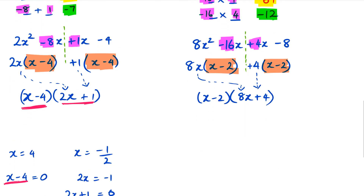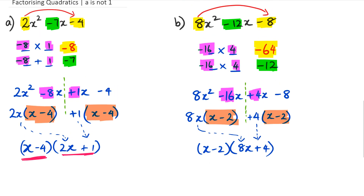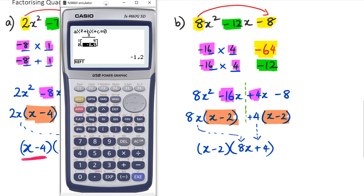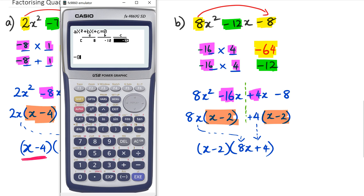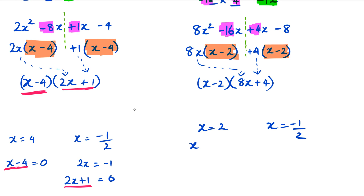One more thing — when you have a look at question B it's going to look slightly different, and that's why I picked this particular question. With question B there's a little bit of an extra step. I'm going to go back and put in my coefficient of x squared which is 8, then my coefficient of x which is negative 12, and the constant which is minus 8. When I solve it I get two answers again: x equals 2 and x equals negative half.